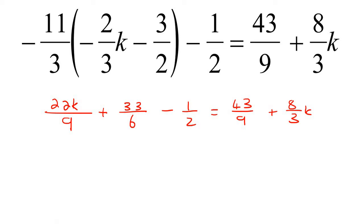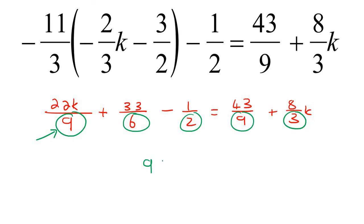Now we can make sure that the denominators are the same. The fastest way to find the common denominator is to look at the biggest number, which is 9. Does 9 work? No, it won't, because the number 2 cannot become a 9. So go to the next multiple: 18. All of those numbers can turn into 18, so let's use that as our common denominator.